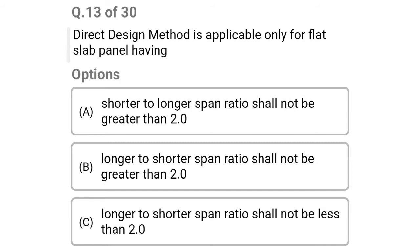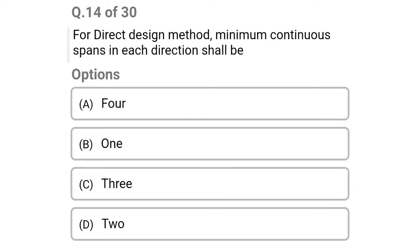Next question: direct design method is applicable only for flat slab panels having — option A: shorter to longer span ratio not greater than 2.0, option B: larger to shorter span ratio greater than 2.0, option C: longer to shorter span ratio not less than 2.0, option D: none of the above.